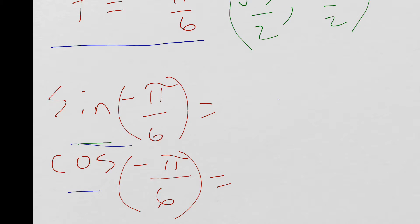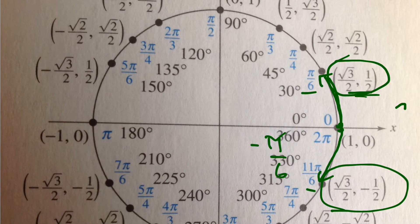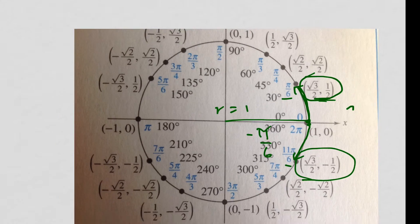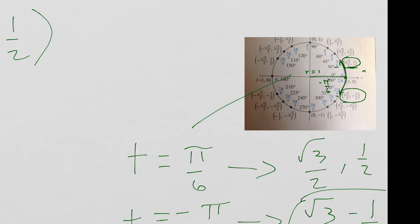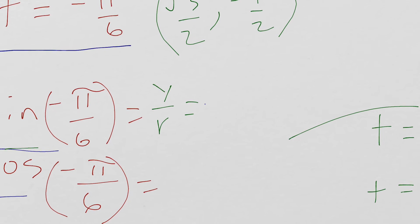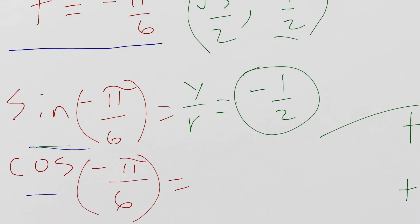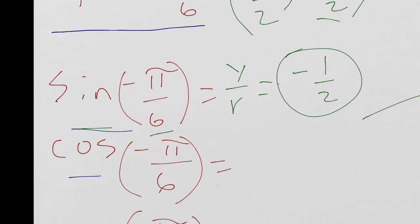Now if you remember, sine is the y over the r, and the r value up here is 1. This distance from here to here is 1. So r equals 1. That's going to cancel out. So trying to get used to this here. So what's our y value? Negative 1 half. What's our r value? 1. Anything divided by 1 is itself. So sine of negative pi over 6 is negative 1 half.